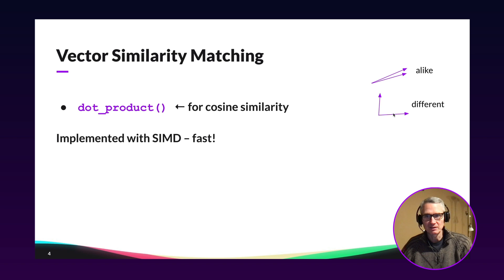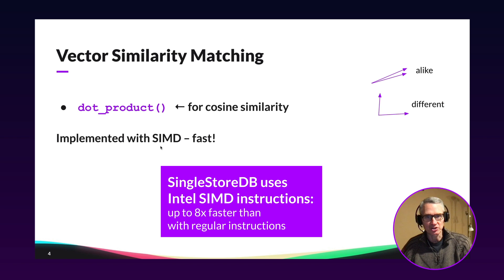A little different here is these two vectors, which are almost orthogonal to each other. And the similarity score between them will be low because the cosine of the angle between them is going to be closer to zero than one because they're not pointing in the same direction. And we implement this dot product function really fast using Intel SIMD instructions.